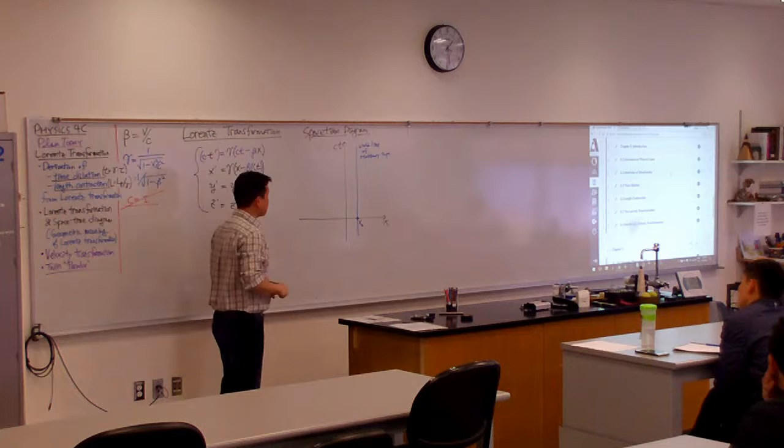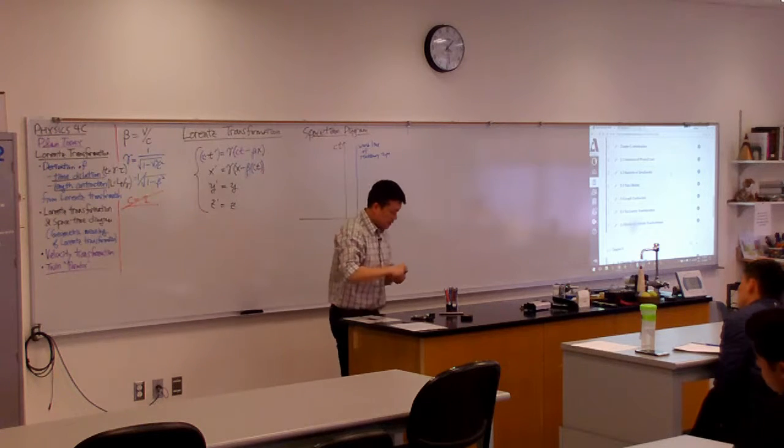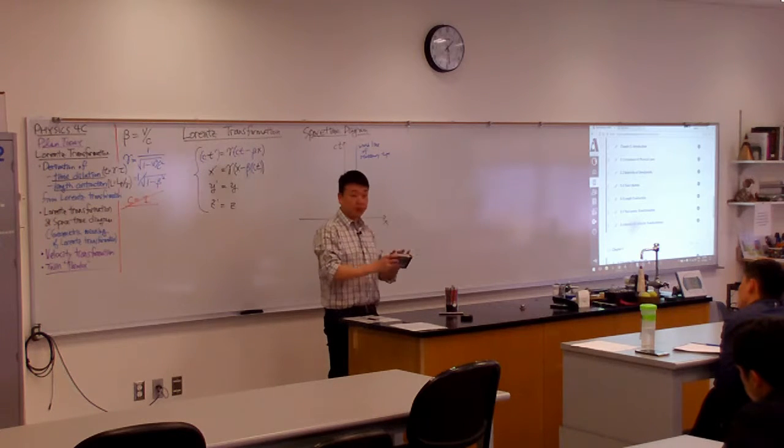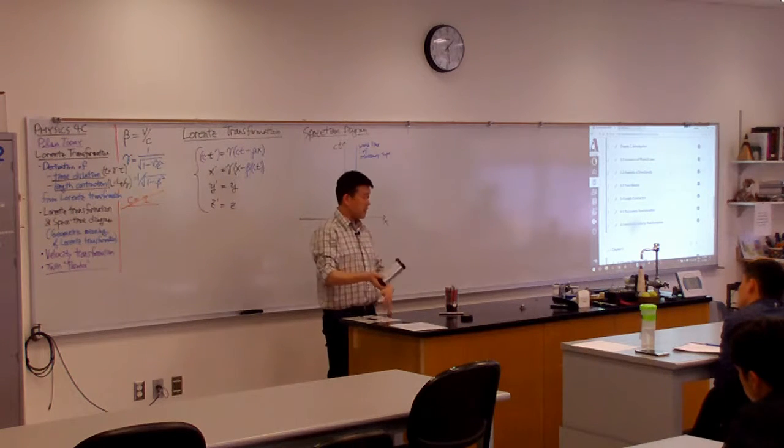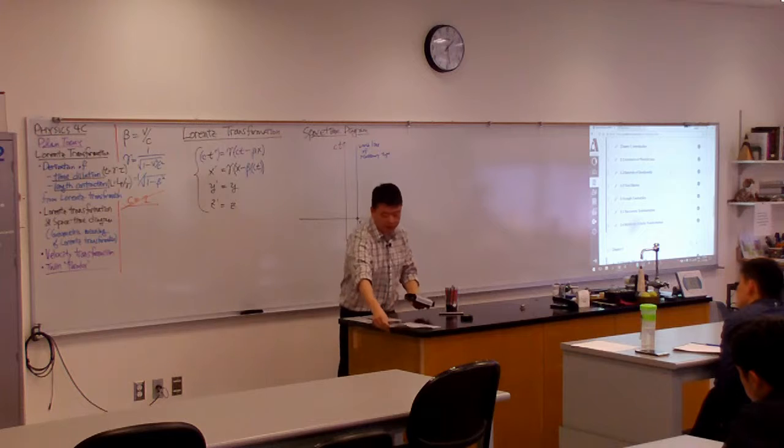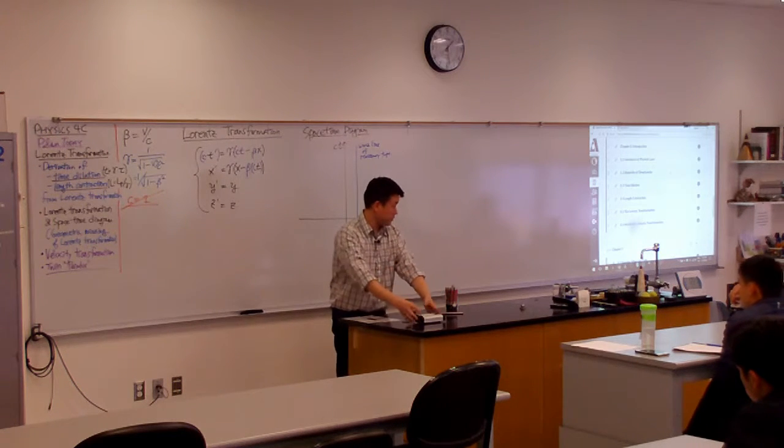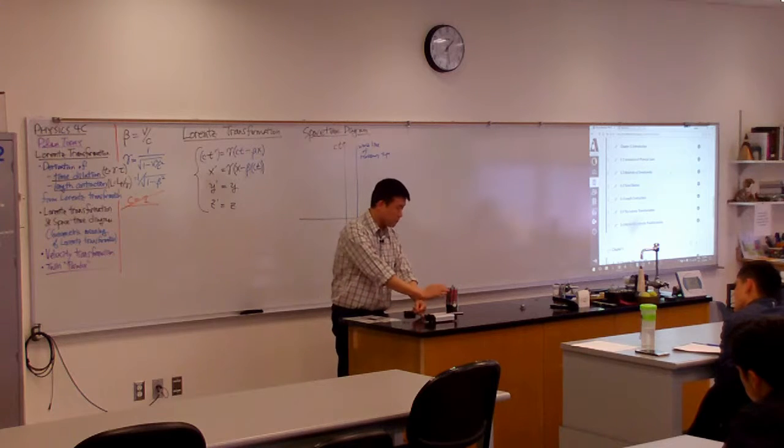Let me introduce one more object. So we had this cart, which was defining the S prime coordinate, right? So let's say I arrange things in such a way that this is at x equals 0, at time equals 0, and it's moving at some constant speed.